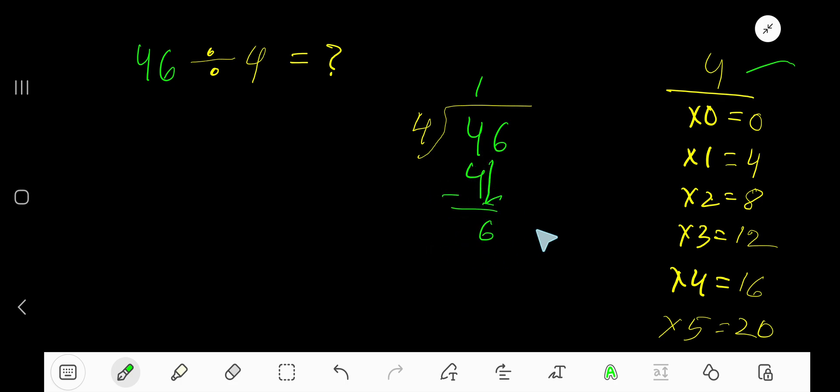06 means 6. 4 goes into 6 how many times? 2 times 8, which is greater, so 1 time. 1 time 4 is 4. Subtract, 2. So our answer is 11 remainder 2.